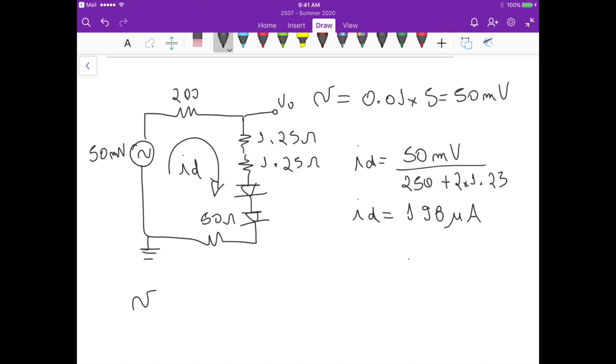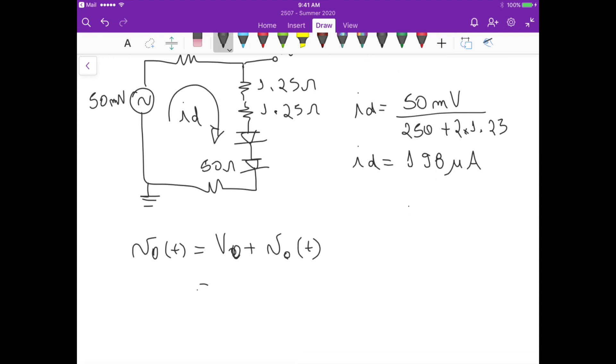So overall we know that V out of t is equals to V out plus the small v. So the capital O here, this V out is equals to id capital I times 50, and this small v out here it's going to be just those 198 microamperes times 52.5.